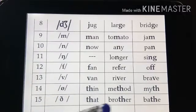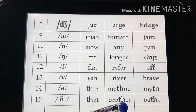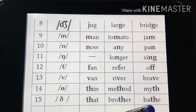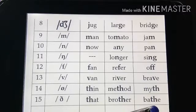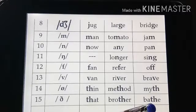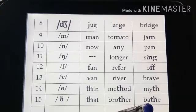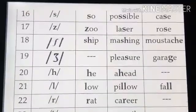This is the voiced /ð/ (th) sound. Examples include: 'that', 'weather', 'bathe'. And the voiceless /θ/ is in: 'thin', 'bath', 'earth'.